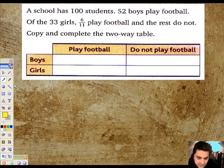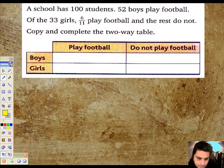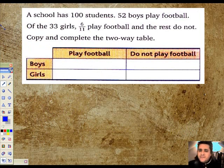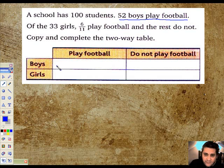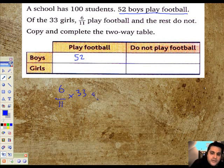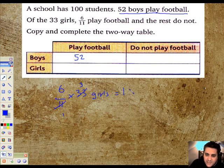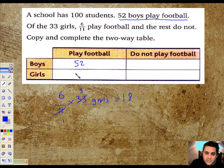Last question I believe is on the other side, and it's a beauty. Nice big question. A school has 100 students, 52 boys play football. I want to highlight that straight away, 52 of our boys play football, so without even reading the question I'm going to go straight into it. Football, boys, 52. Of the 33 girls, I know I've got a total of 33 girls here, and six elevenths of them play football, and the rest do not. Apparently six elevenths of the 33 girls play football. Well, I know it's a calculator unit, I'm not going to use a calculator. 11 goes into himself once, 11 into 33 goes three times. I'm left with 6 times 3 is 18, 18 divided by 1 is still 18. So these 18 girls actually play football.